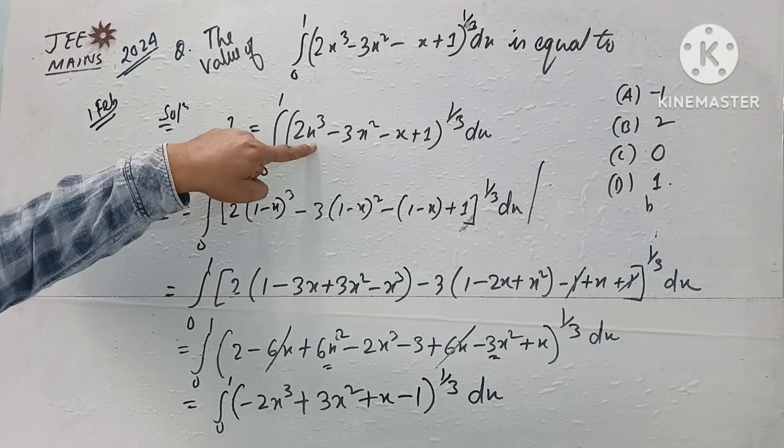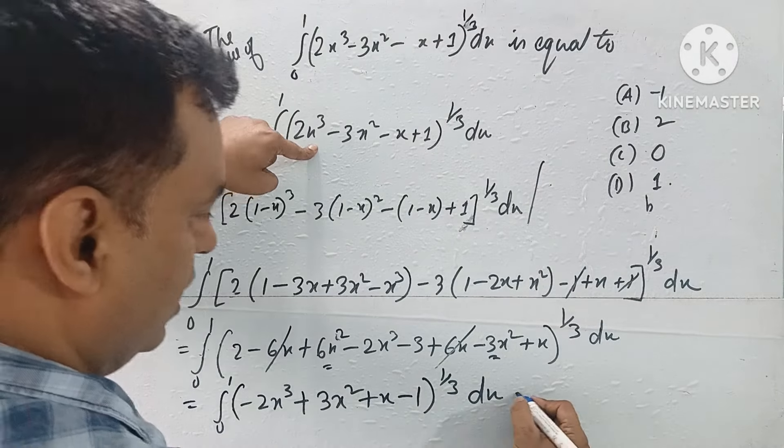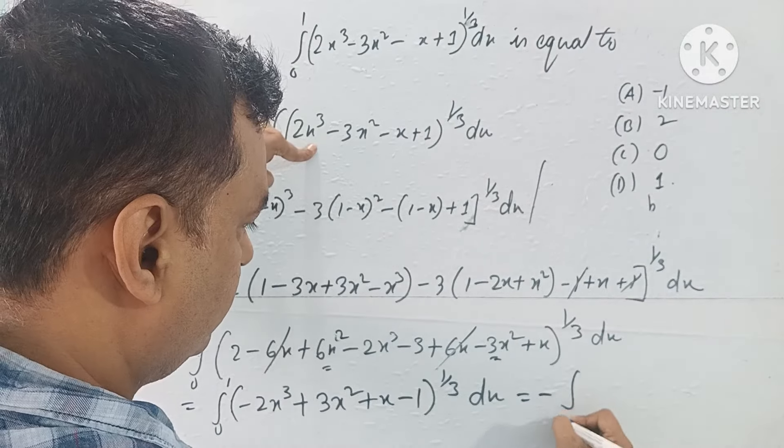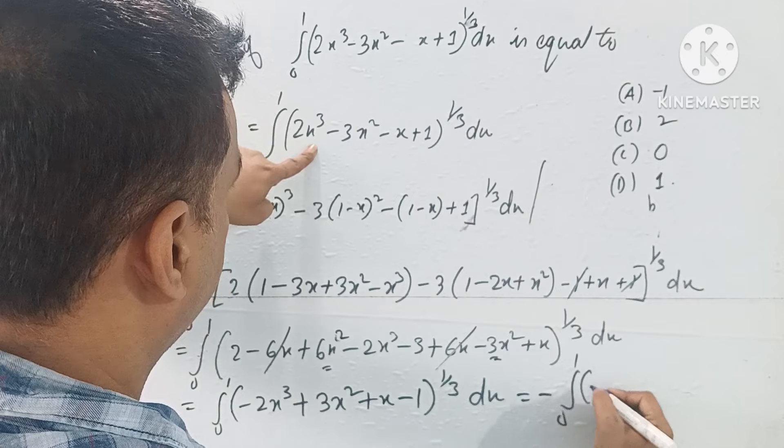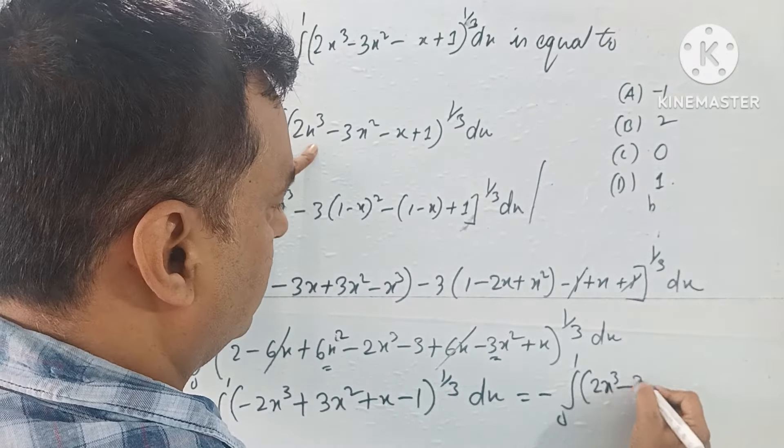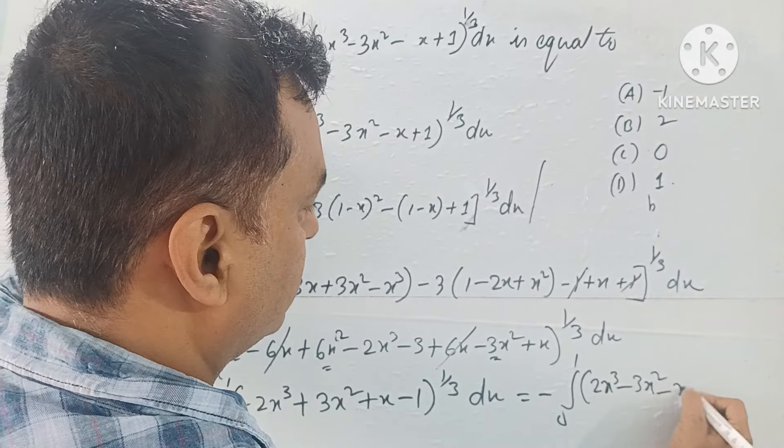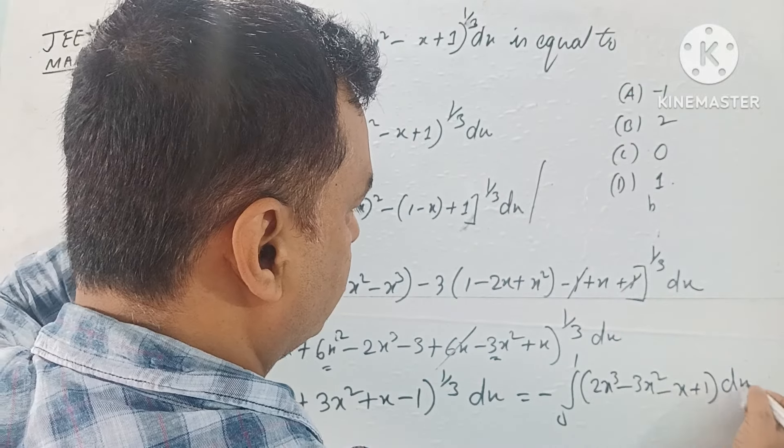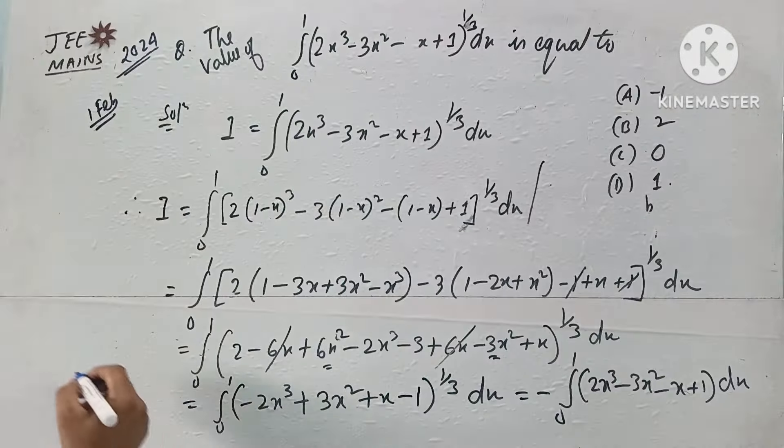Now the expression we got is the negative of the original. That means minus integral 0 to 1 of (2x³ - 3x² - x + 1)^(1/3) dx.